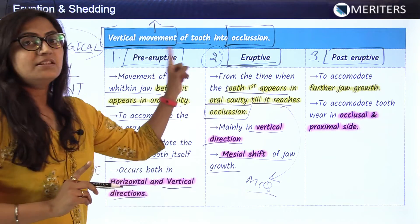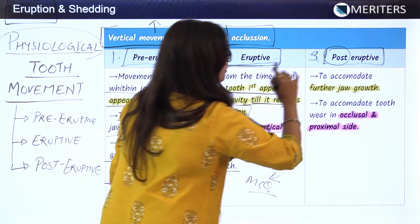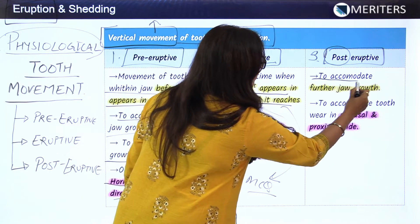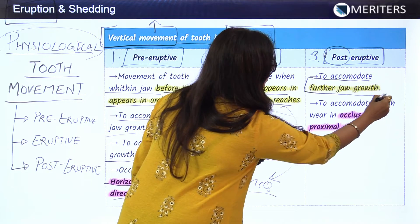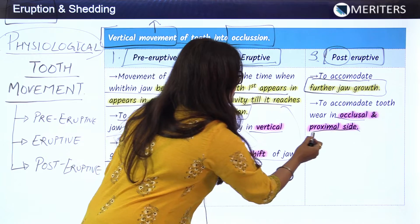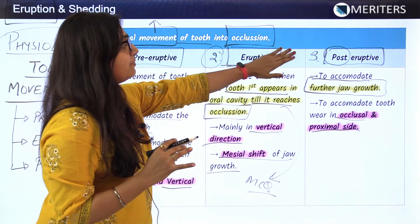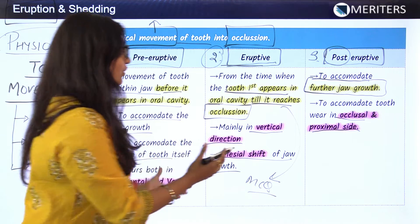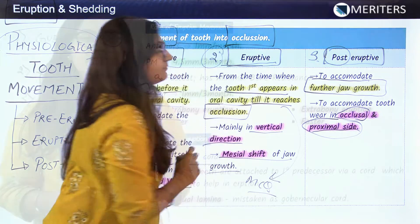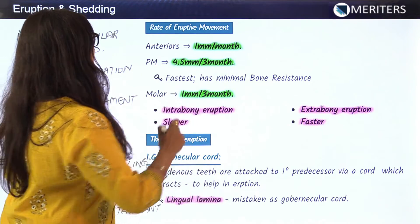The third stage is the post-eruptive stage. The tooth is already in the oral cavity. Here, it accommodates further jaw growth to maintain the tooth in occlusion and on the proximal side. Once the tooth has appeared in the oral cavity, the post-eruptive stage accommodates for jaw growth in the occlusal and proximal dimensions.